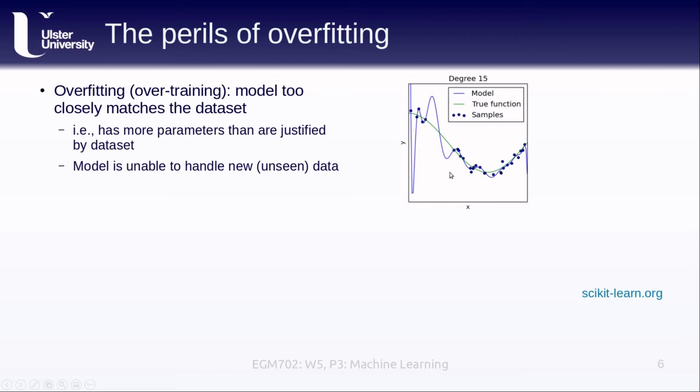In this example shown here we have a number of sample points. We're attempting to model a particular function that's shown in green, and if we use, for example, a polynomial of degree 15, we get a really great fit to our training data.